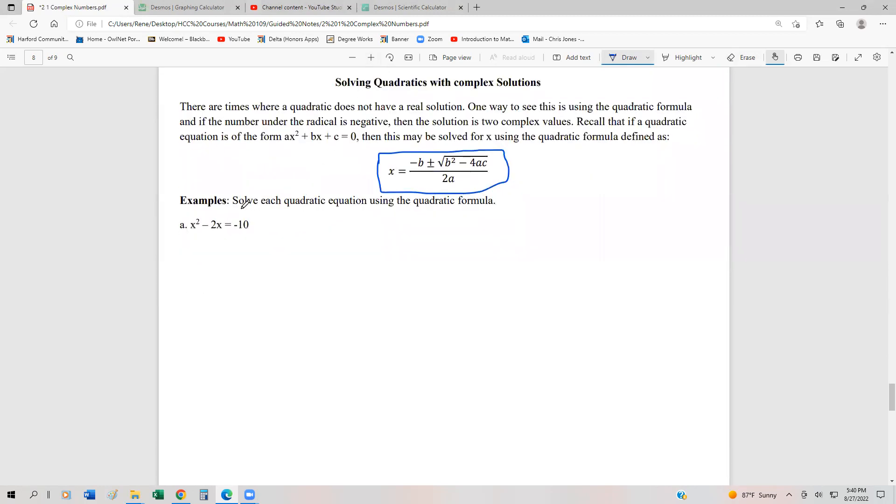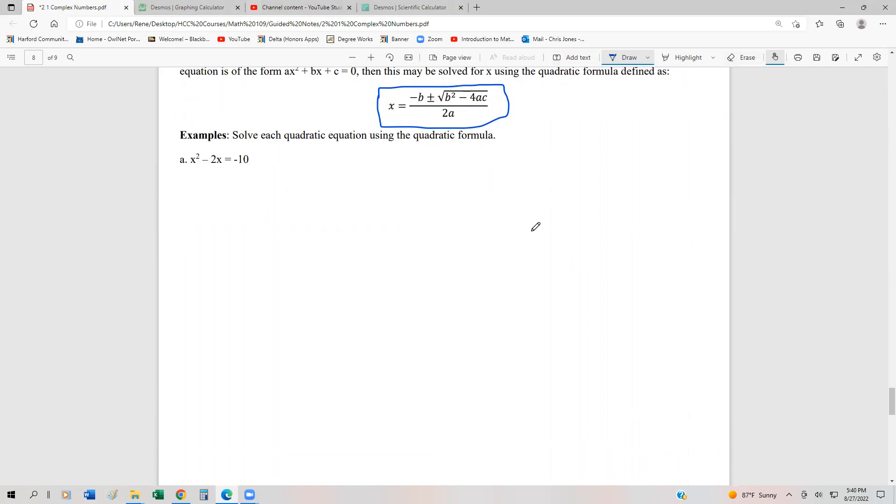Our first one, we want to solve our equations using the quadratic formula, and we have x squared minus 2x equals negative 10. To solve any quadratic, the first thing you should always do is set the quadratic to zero. We're going to take this negative 10, add it to the left-hand side, and we're going to get x squared minus 2x plus 10 equals zero.